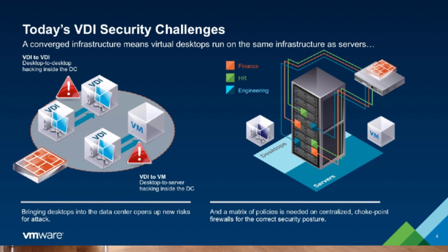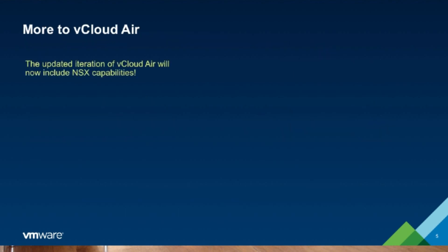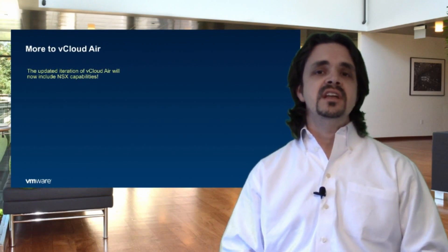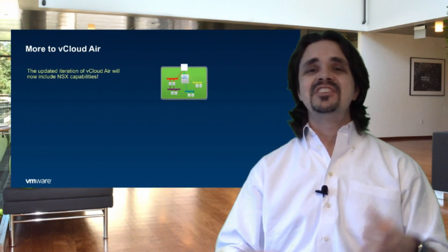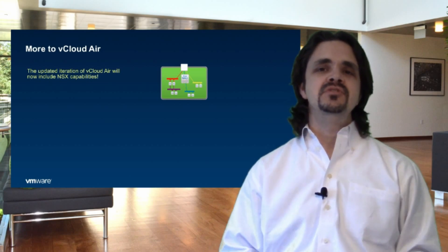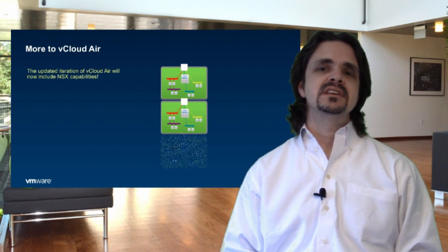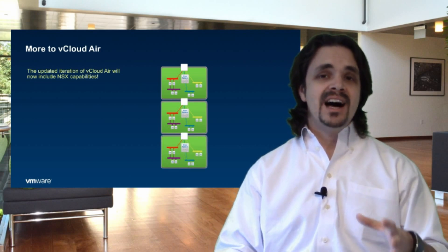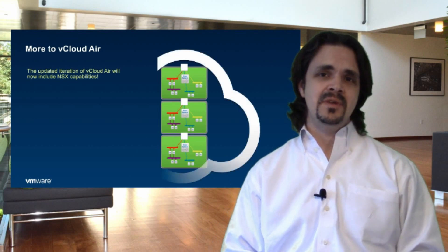Additionally, NSX is being integrated into vCloud Air. So now it's not just inside of the data center, not just across data centers, but we have all new capabilities with NSX. We know that NSX allows us to create an entire network and even clone and snapshot the network. Now imagine being able to do that not only on-premise, but off-premise inside of vCloud Air. The possibilities really start expanding from here.